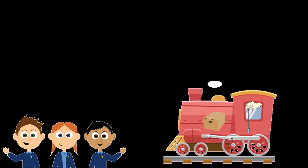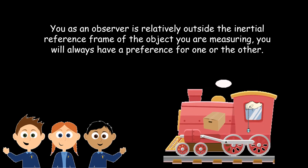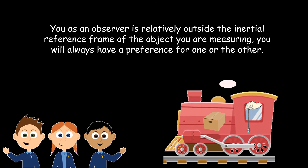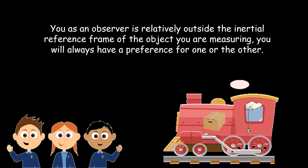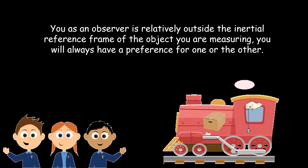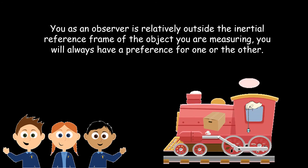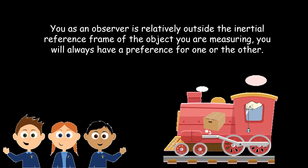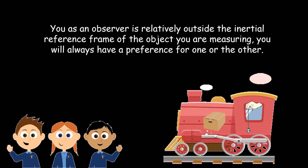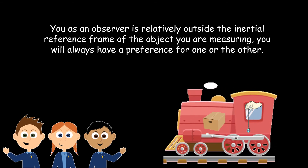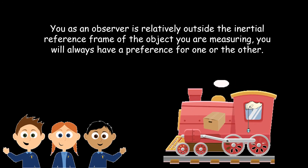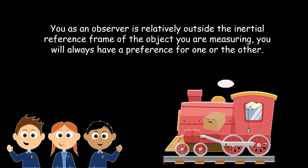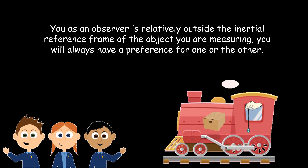If you do the same set of measurements with you at rest on the ground while the box and the swinging pendulum you are measuring are inside the uniformly moving bus, then this time you will have measured different lengths for the box and periods for the pendulum. Being aware that you as an observer are relatively outside the inertial reference frame of the object you are measuring, you will always have a preference for one or the other.